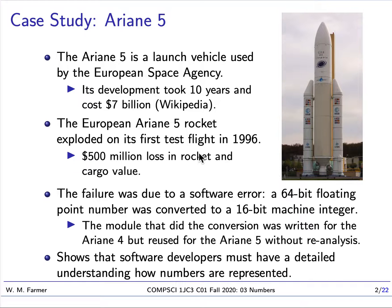The Ariane 5 is a launch vehicle used by the European Space Agency — you can see a picture of it on the right. On its first test flight in 1996, this rocket was shot up and exploded, resulting in a loss of $500 million for both the rocket and the cargo it was carrying. The rocket blew up because a number represented as a 64-bit floating point number was converted to a 16-bit machine integer. So we went from 64 bits to 16 bits, and this loss of information is ultimately what caused the software error.